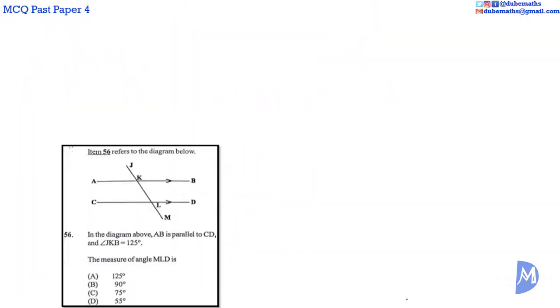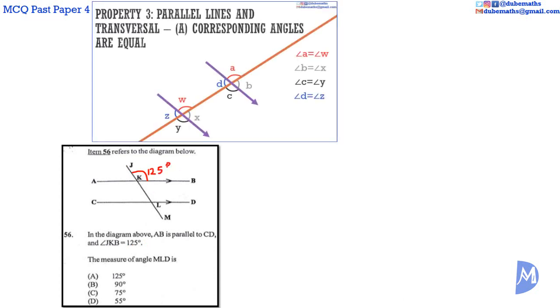Question 56. Angle JKB is equal to 125 degrees. When two parallel lines are cut by a transversal, corresponding angles are equal. Thus, angle KLD is also equal to 125 degrees.